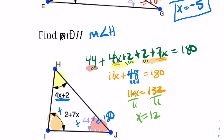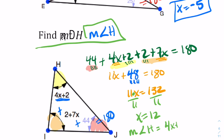Go back and check the directions — it says to find the measurement of angle H. X equals 12 is not the measurement of angle H, so we plug X in: the measurement of angle H is 4X plus 2, so 4 times 12 plus 2. That's 48 plus 2, which gives us 50. So our measurement of angle H is 50 degrees.